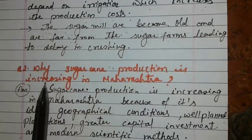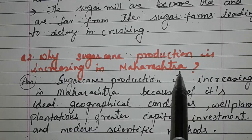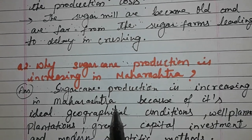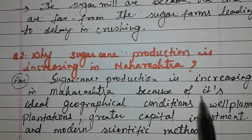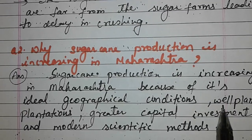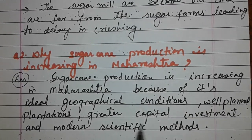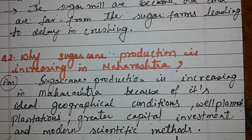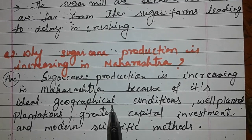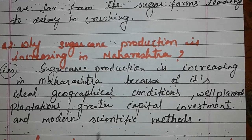Question: Why is sugarcane production increasing in Maharashtra? Answer: Sugarcane production is increasing in Maharashtra because of its ideal geographical conditions, well-planned plantations, great capital investment, and modern scientific methods. Geographical conditions here include favorable temperature, rainfall, and soil.